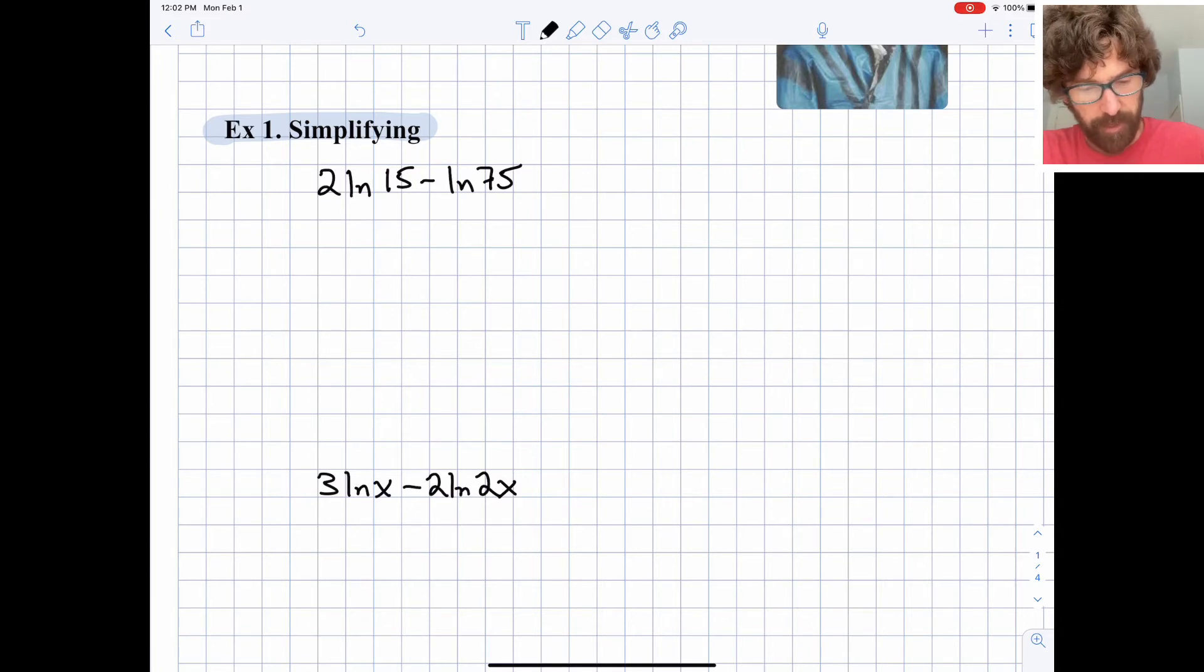So we can apply our rules of logarithms here. And first, I'm going to apply the power rule. And I'm going to write this as natural log of 15 squared minus the natural log of 75. I can then simplify that a little bit. Natural log of 225 minus the natural log of 75.